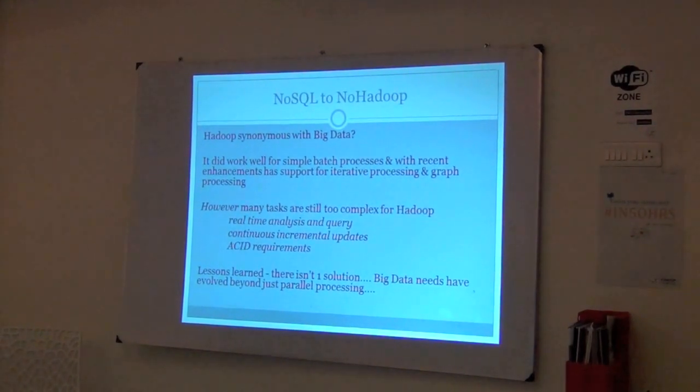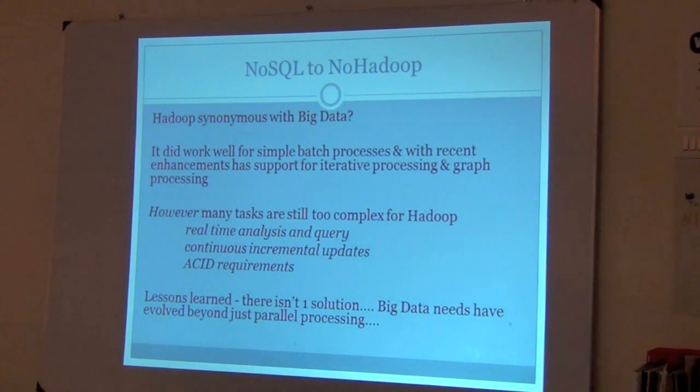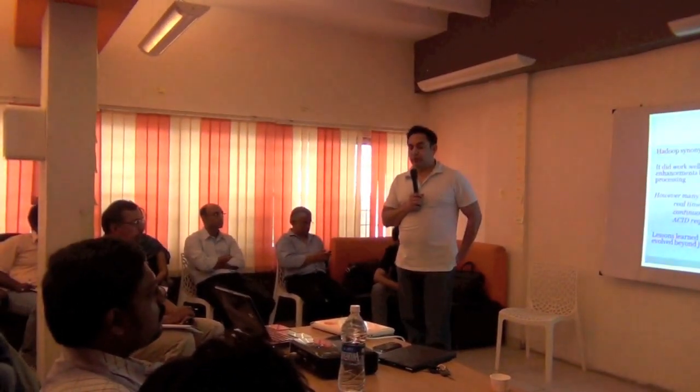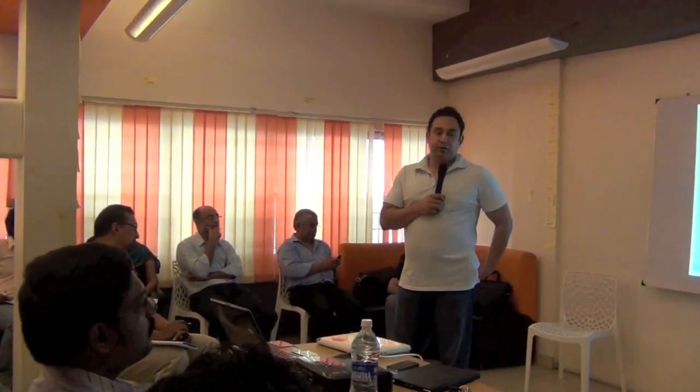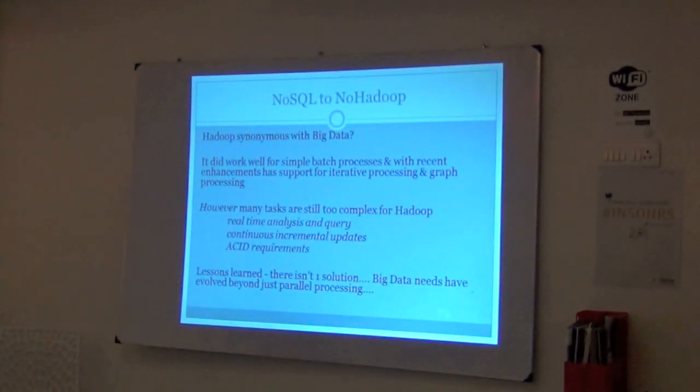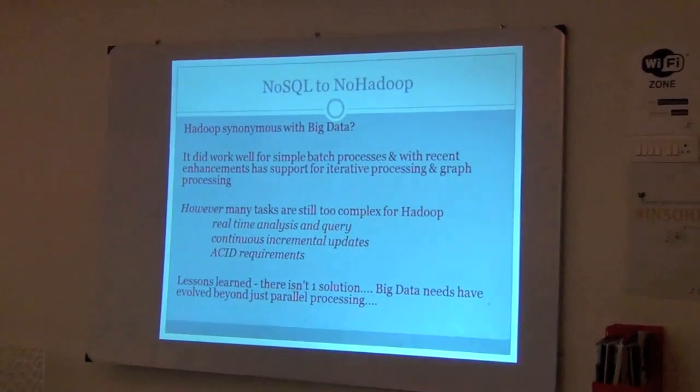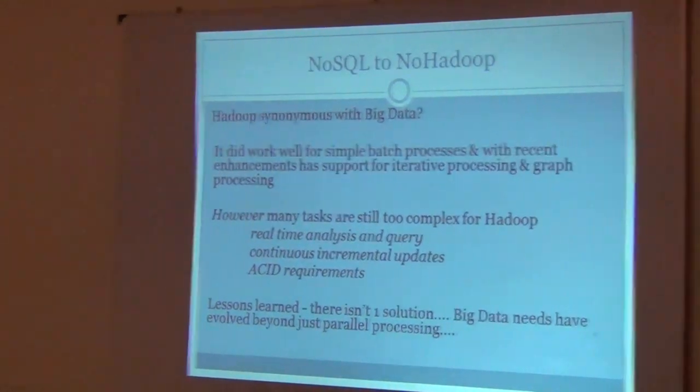So is Hadoop really synonymous with big data? It does work for simple batch processes that don't have hard build-time requirements. Now things like iterative processing are being added to Hadoop. But many tasks — anything that requires ACID properties, anything that requires continuous incremental updates — Hadoop is not a good fit there, and those are the use cases we have. We use OLTP systems for transaction processing. We use Oracle at the scale we run at, because an RDBMS is still best suited for transactional use cases.